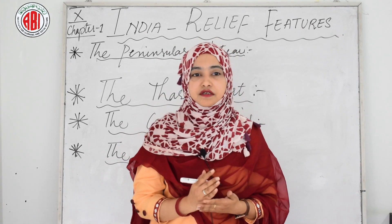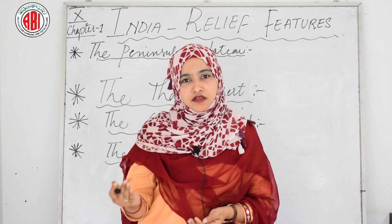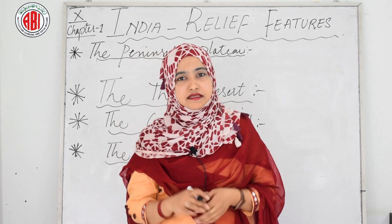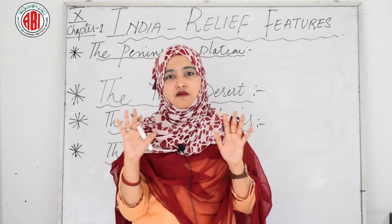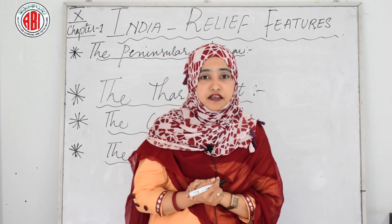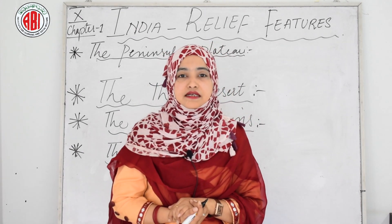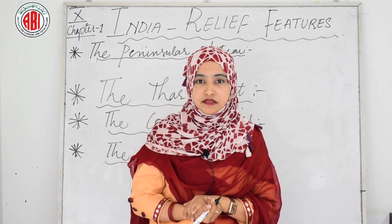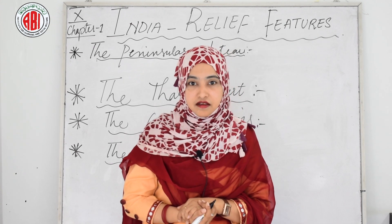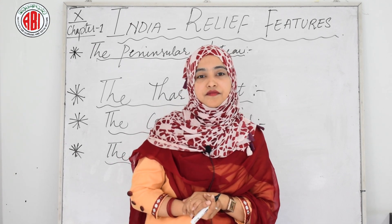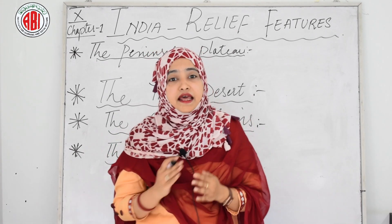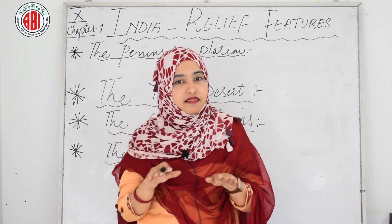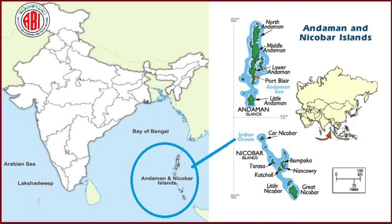The next relief feature of India is the Islands. An island is a land surrounded by water on all four sides. Examples include Sri Lanka, the Andaman and Nicobar Islands stretching in the Bay of Bengal, and the Lakshadweep Islands in the Arabian Sea.